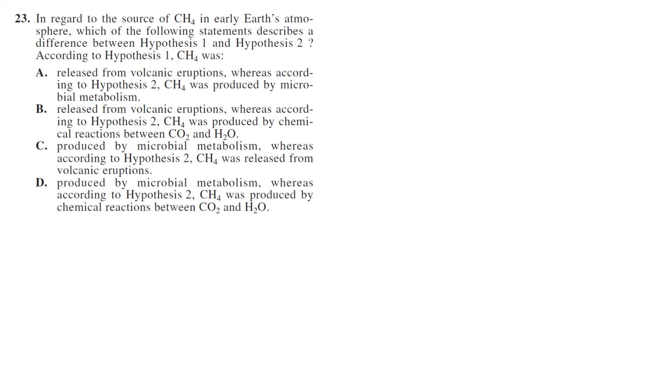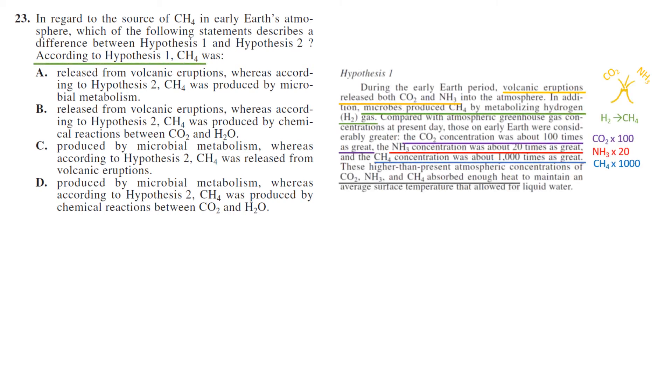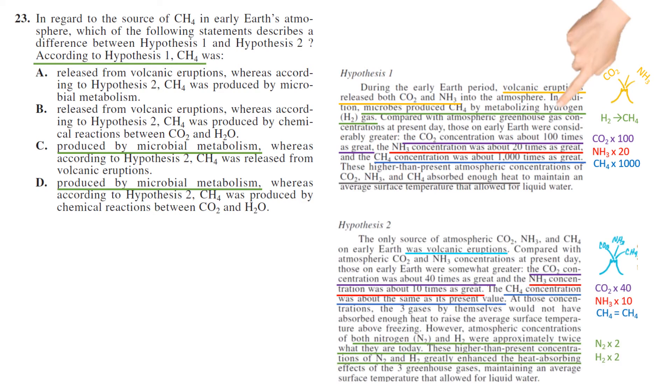In regard to CH4 in early Earth's atmosphere, which of the following statements describes the difference between hypothesis one and two? According to hypothesis one, CH4 was... So CH4 in hypothesis one was metabolized using hydrogen gas. We'll see that in choice C or D. Now in hypothesis two, because what continues, it says whereas in choice C and D, hypothesis two CH4 came from volcanic eruptions. So choice C has to be the correct answer.